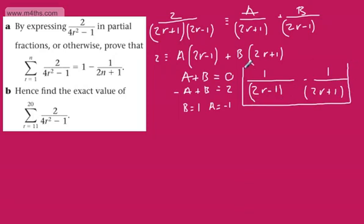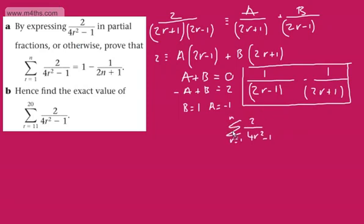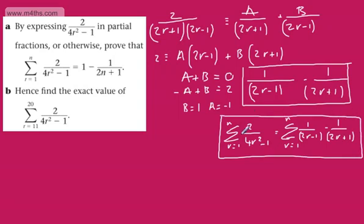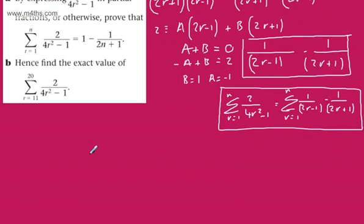The whole idea of the method of differences is that the sum from r equals 1 to n of 2 over 4r squared minus 1 can now be written as the sum from r equals 1 to n of 1 over 2r minus 1, minus 1 over 2r plus 1. As with all the other videos, I will manually sum the terms and it should make sense from there.